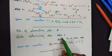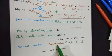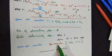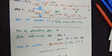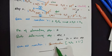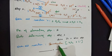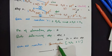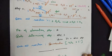For the rate determining step, molecularity is 2. Molecularity of 2 stands for a bimolecular reaction. This is how we sum up whether it's a unimolecular, bimolecular, or trimolecular reaction and so on.